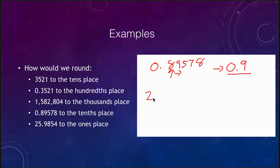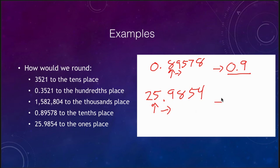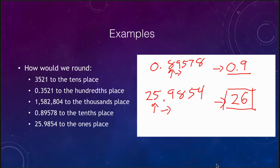Our last example: 25.9854, and we want to round it to the ones place. We look at the number to the right, which is a nine. Since that is five or greater, we increase the ones digit by one — that becomes 26. All of our remaining digits are to the left of the decimal point, so we are done. We just drop all the decimals and our answer, rounding 25.9854 to the ones place, is simply 26.